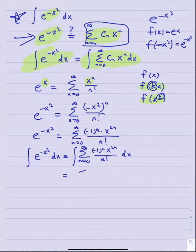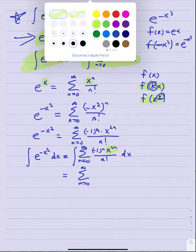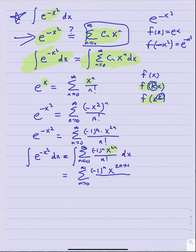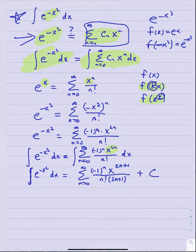Integrating that series term by term using the power rule gives: negative one to the n times x to the 2n plus one divided by n factorial times 2n plus one, plus some additive constant of integration. So the antiderivative of e to the minus x squared is definitely this power series plus a constant. Even when I can't find elementary antiderivatives, I may be able to find power series for the antiderivatives of those functions.